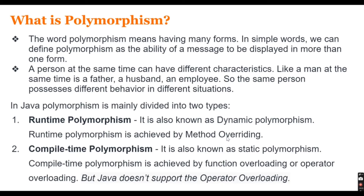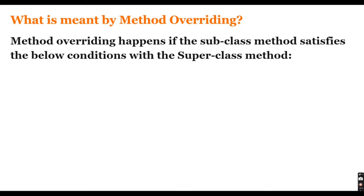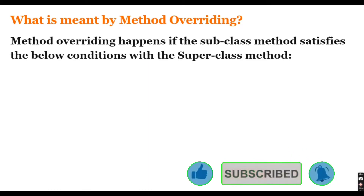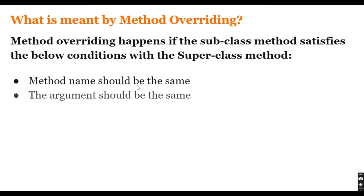In this video we will understand method overriding in detail, and in the next video we will cover method overloading. Method overriding happens when a subclass method satisfies certain conditions with the superclass method. As we know, superclass is the parent class and subclass is the child class. If the subclass has the same method declared in the parent class, it is known as method overriding. The method name should be the same, and the arguments — the number of parameters — should also be the same.